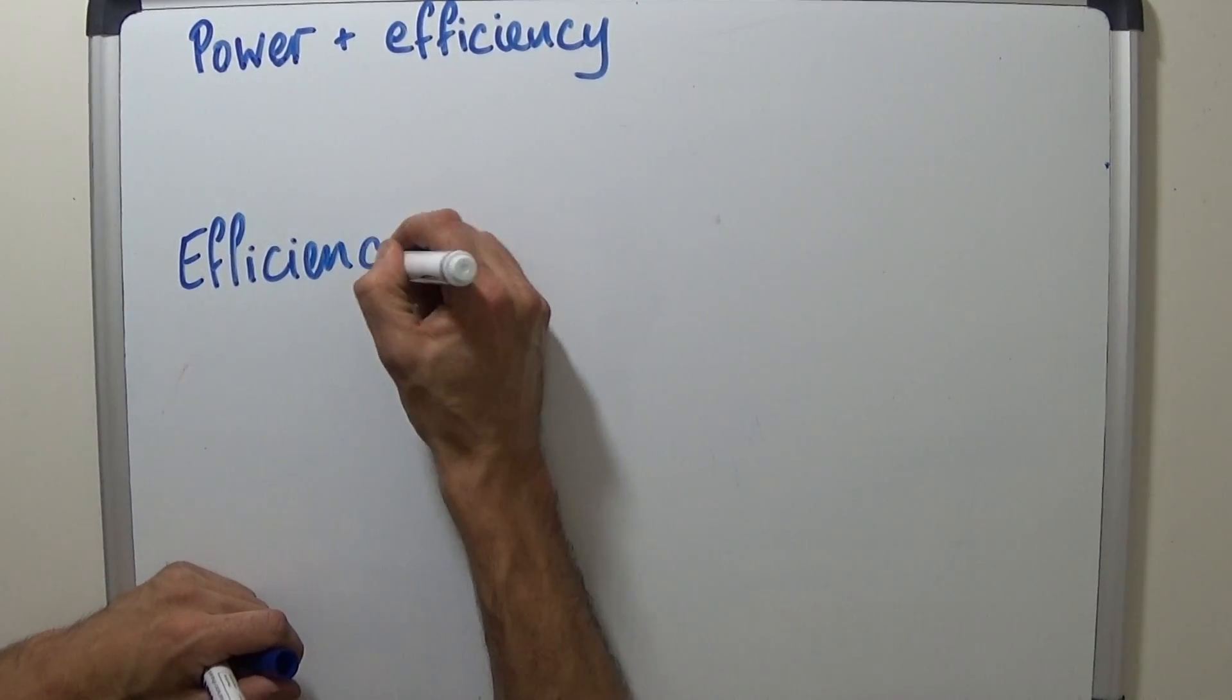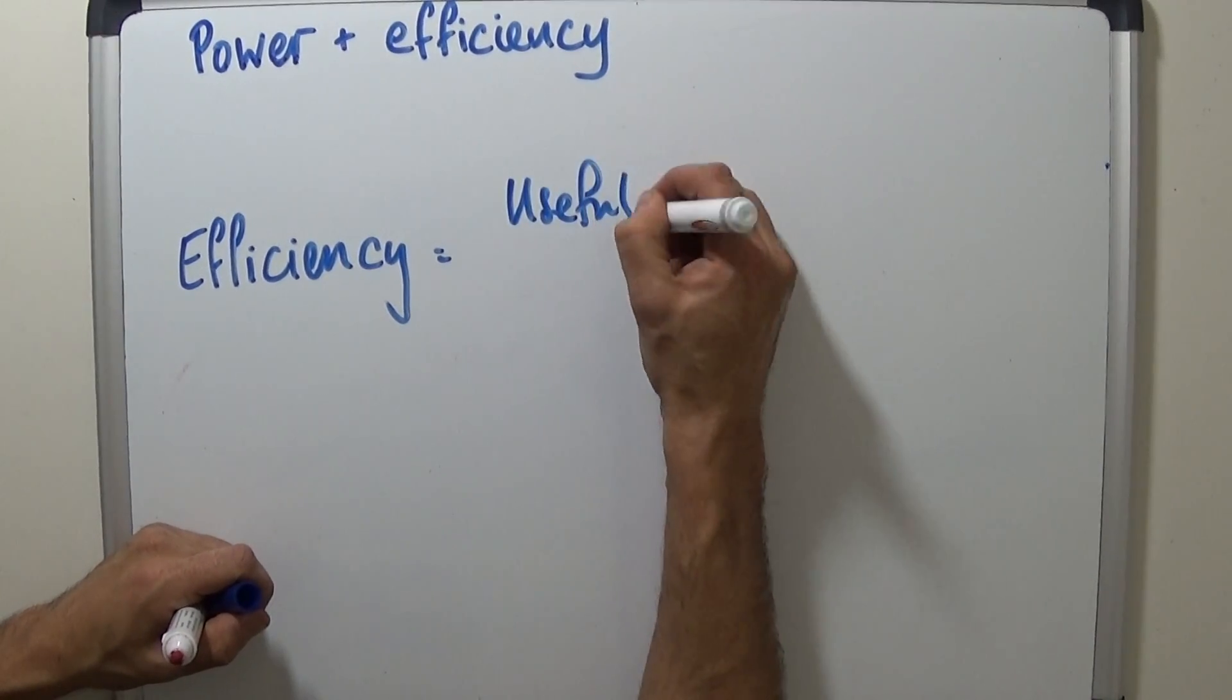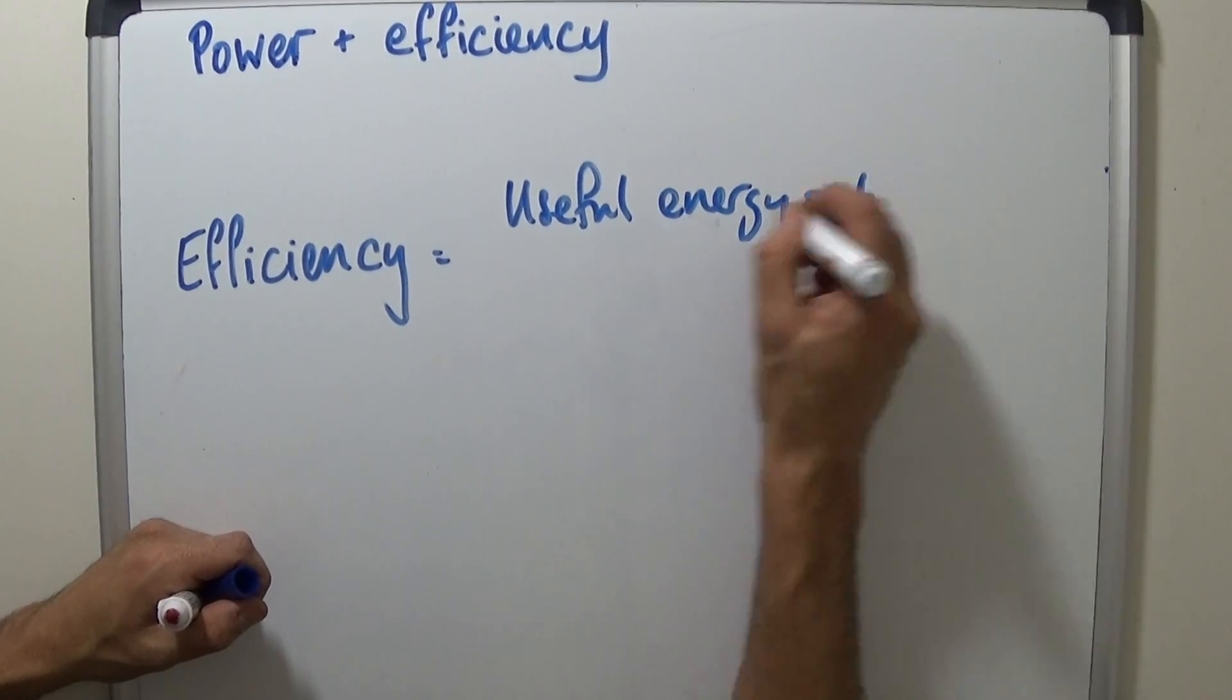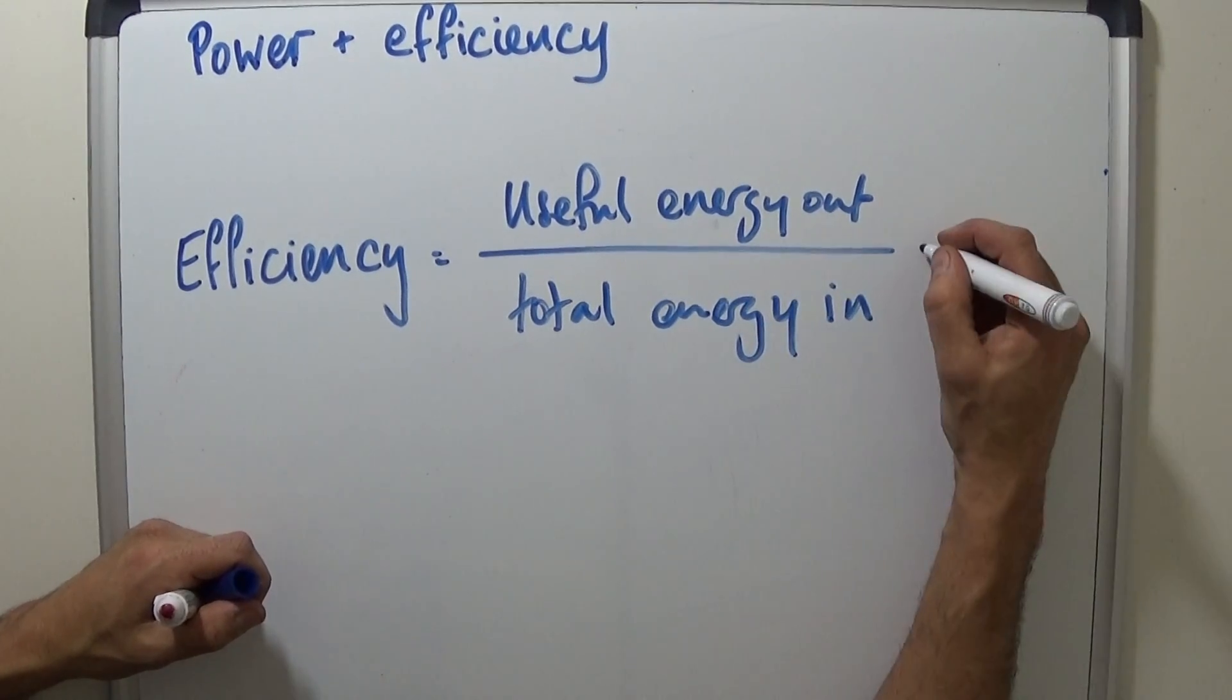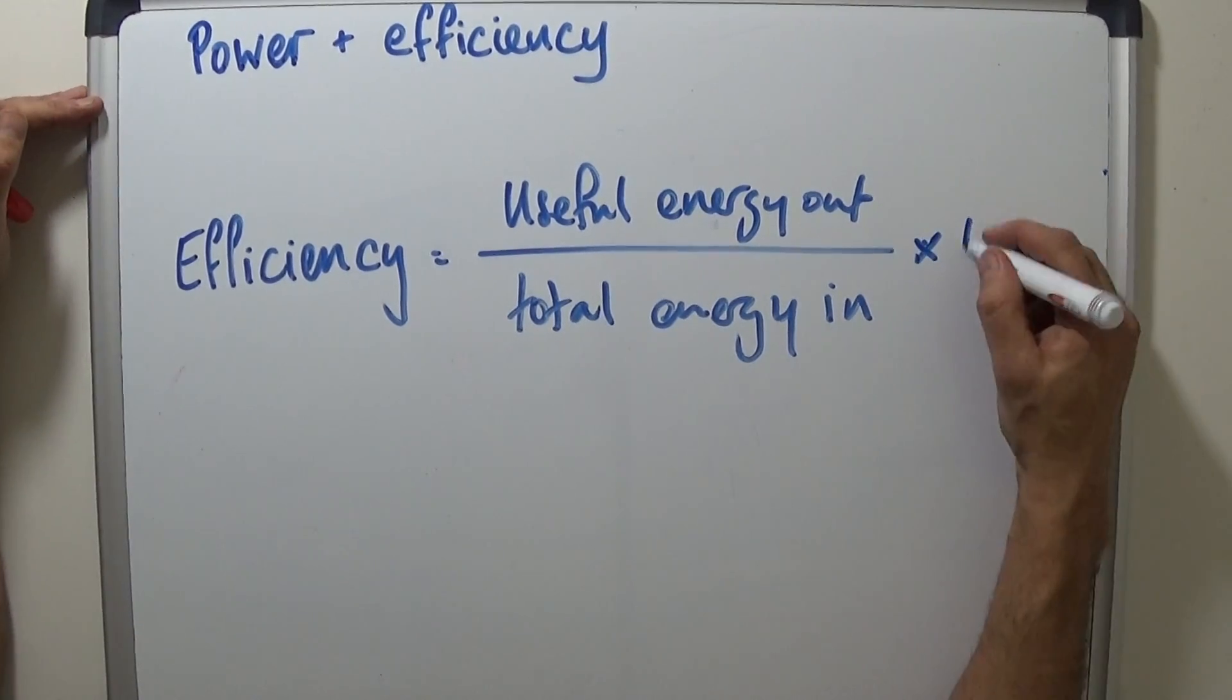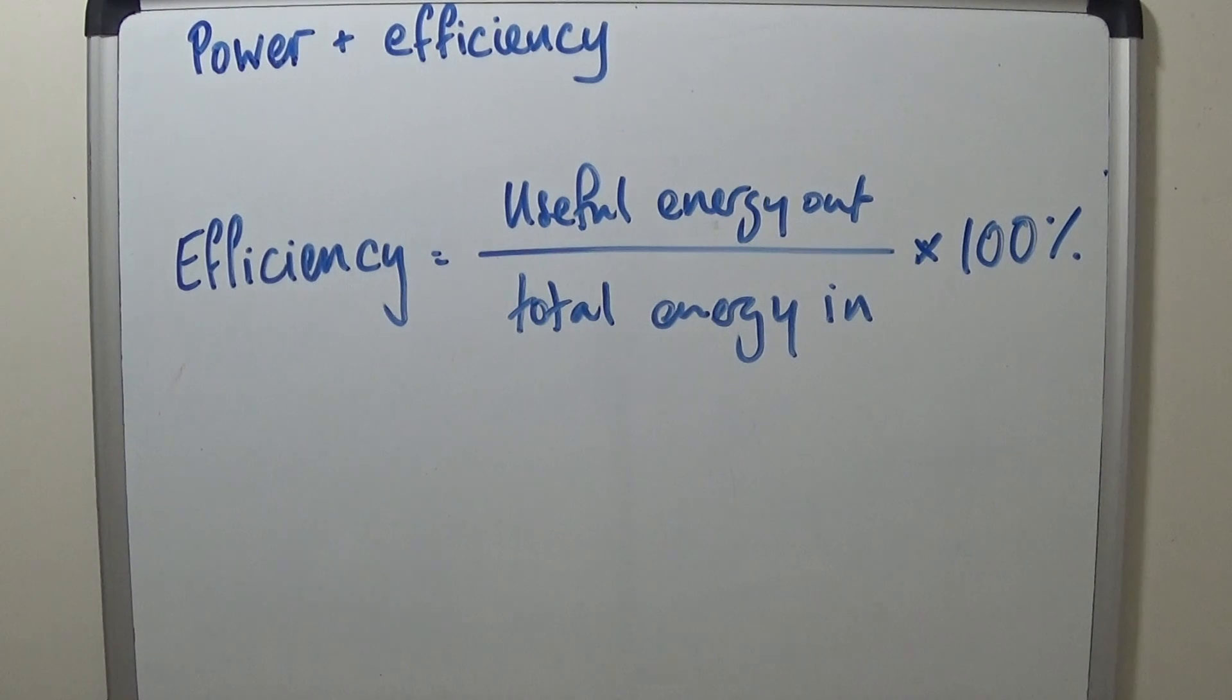Efficiency is basically useful energy output divided by total energy input. And then it's sometimes expressed as a ratio, and it's sometimes expressed as a percentage. And unfortunately, that hasn't changed from GCSE. It's still sometimes expressed as one or sometimes expressed as the other. But generally speaking, it's a percentage.